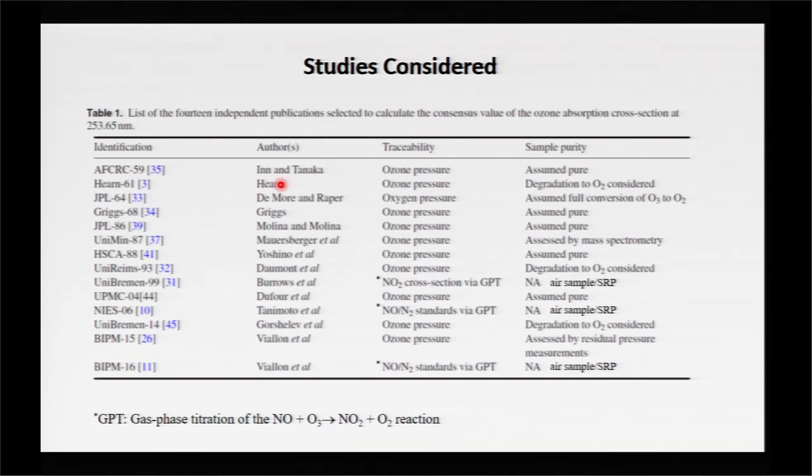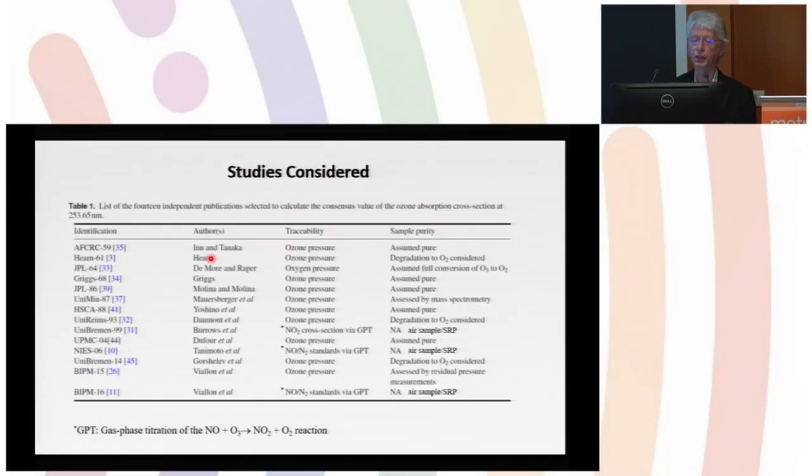The big issue here is how do you prepare a known quantity of ozone and assess its purity, and then do the absorption measurement. There are essentially two ways. Traditionally people would in the old days generate nearly pure ozone through discharge tubes, do some purity analysis, and either use a dispersive spectrometer with a broadband light source or a mercury lamp.